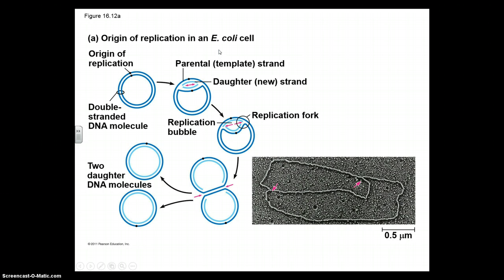This is happening in E. coli right here — we are looking at an origin of replication in a prokaryotic cell. The double-stranded molecule is circular. An enzyme splits the two strands apart, and you end up with a bubble on the inside. The new molecule is built on the inside, represented in light blue. This continues all the way around until there are two separate pieces of DNA. The place where the two original strands separate is referred to as the replication fork. The bottom right shows a diagram of DNA replication actually occurring within an E. coli cell.